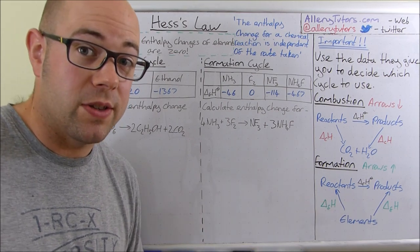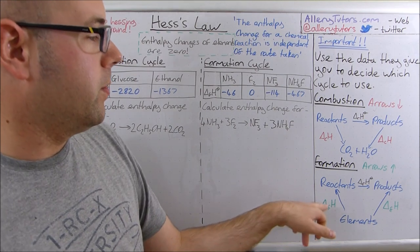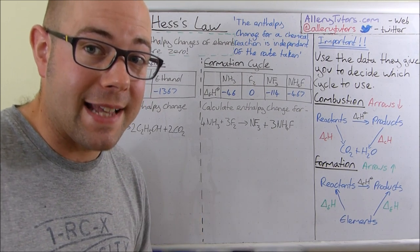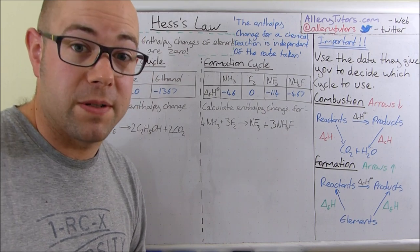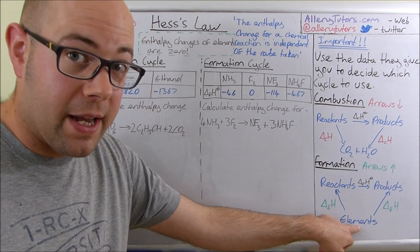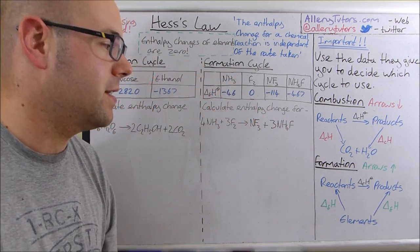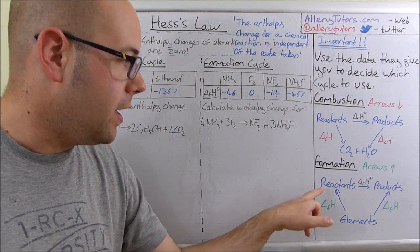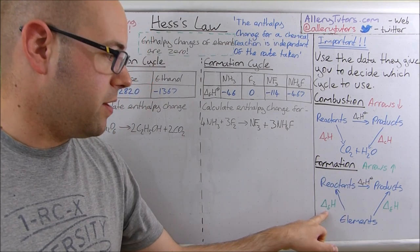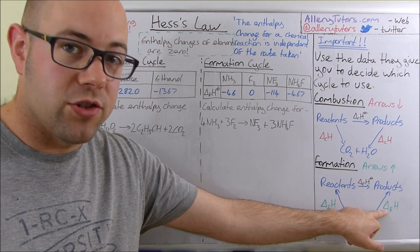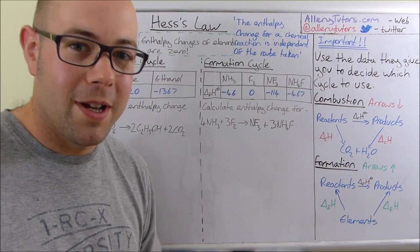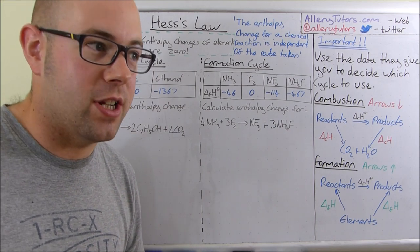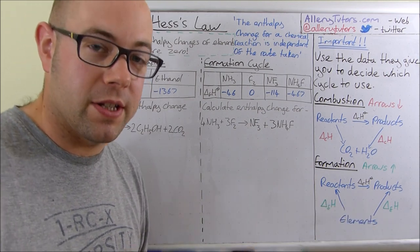The other one is the enthalpy of formation. This is the enthalpy change for the formation of products and reactants from elements in their standard states — specifically the formation of one mole of reactants and products from their elements in their standard states. So the elements are at the bottom, and because we're forming from elements in their standard state the arrows go upwards. Reactants and products are on the left and on the right.